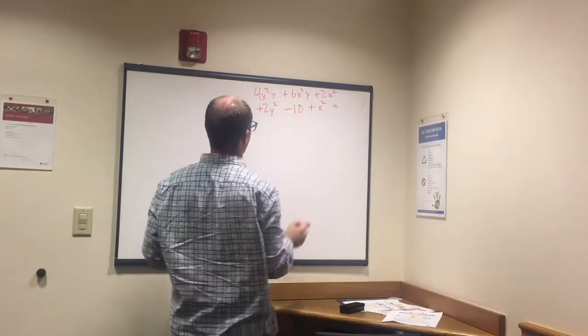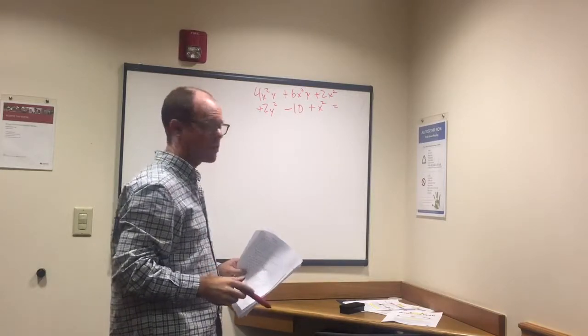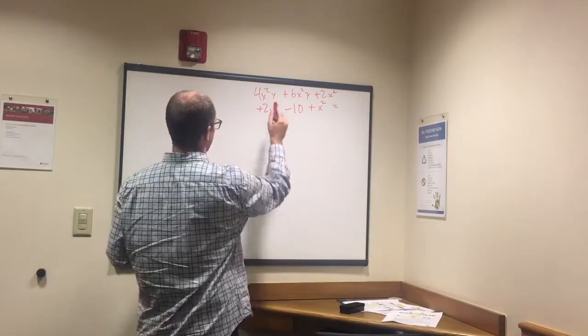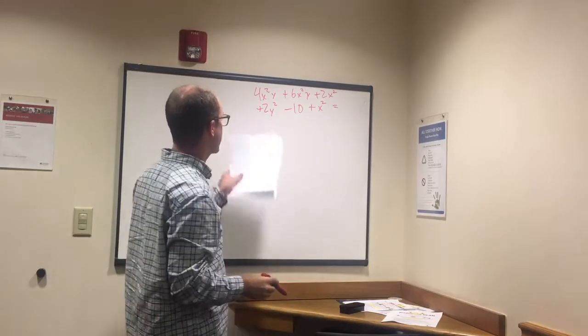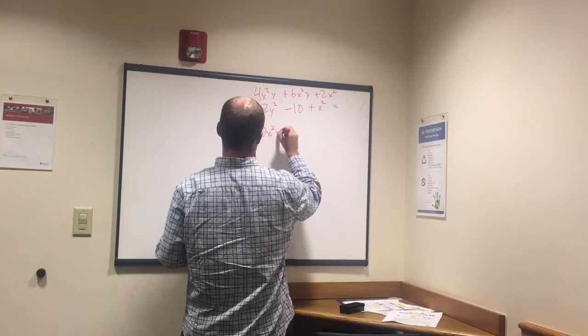We have x squared y in both of them. We don't have anything else that has the x squared y, so 4x squared y plus 6x squared y, we're just adding 4 and 6, so we got 10x squared y. Get rid of all these.